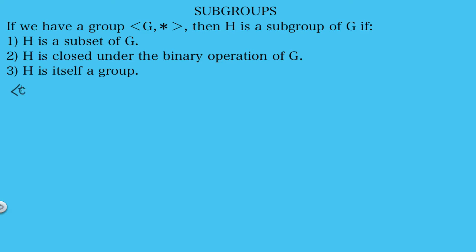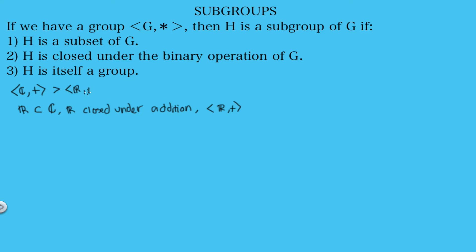We know that the set of complex numbers with addition is a group. Let's see if we can find any subgroups. First, in order to be a subgroup we need it to be a subset. The real numbers are a subset of the complex numbers, and they are closed under addition, and the set of real numbers with addition is a group. So it satisfies all three requirements, and the set of real numbers with addition is a subgroup of the complex numbers.